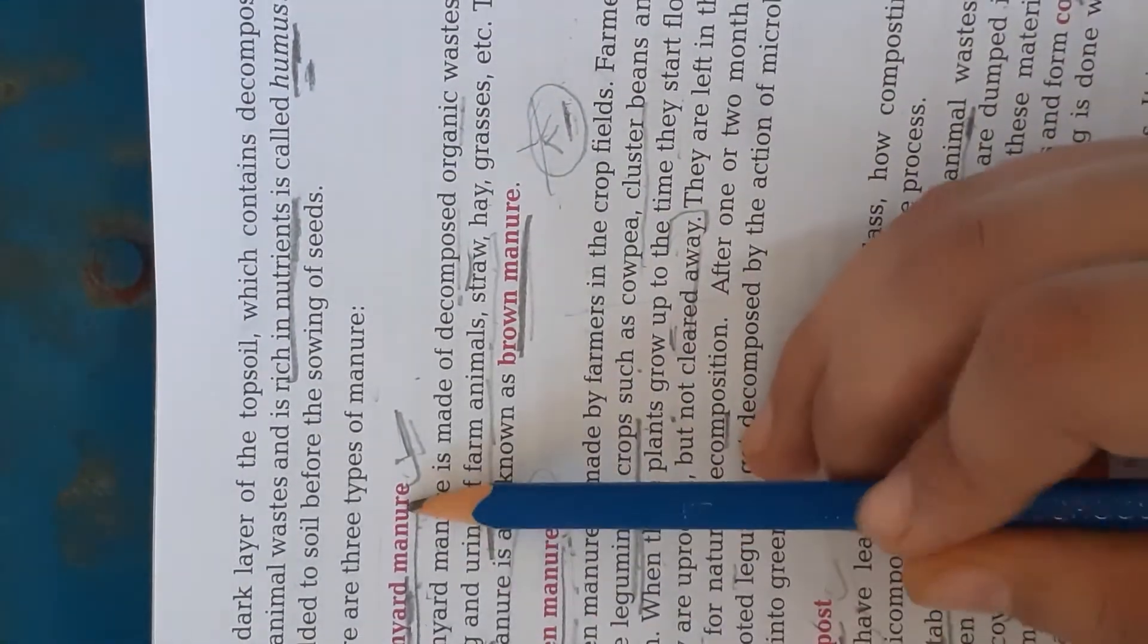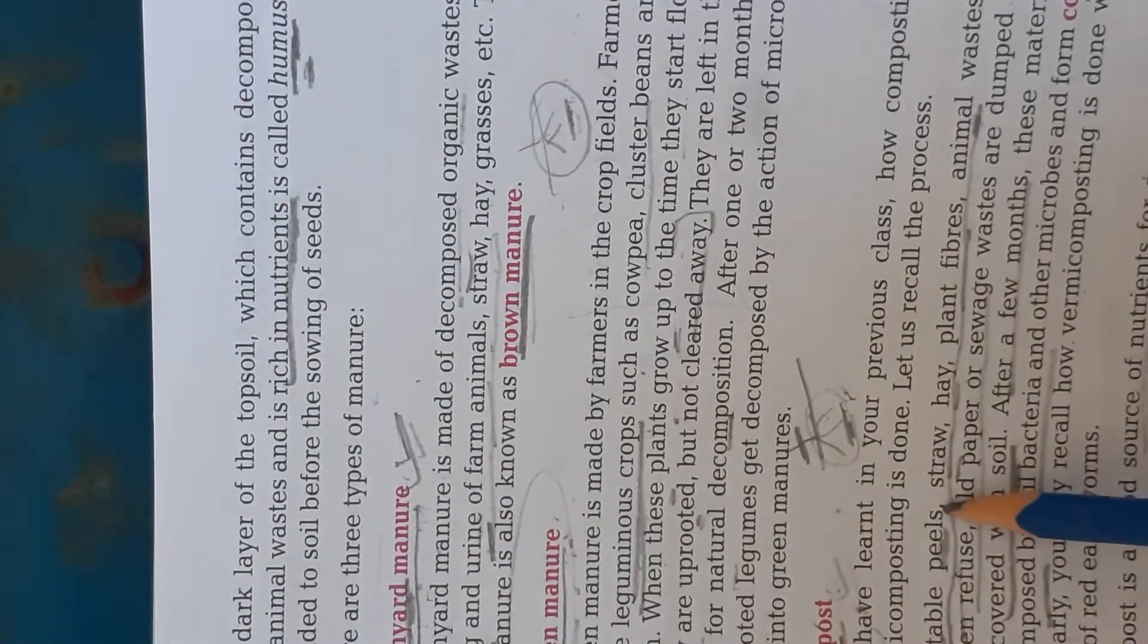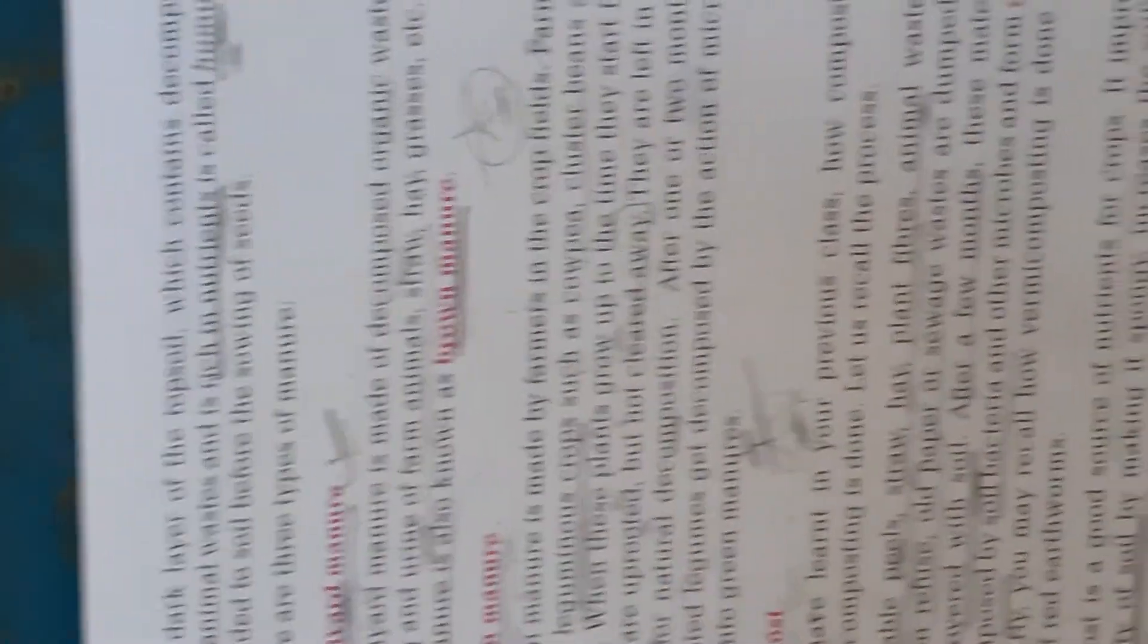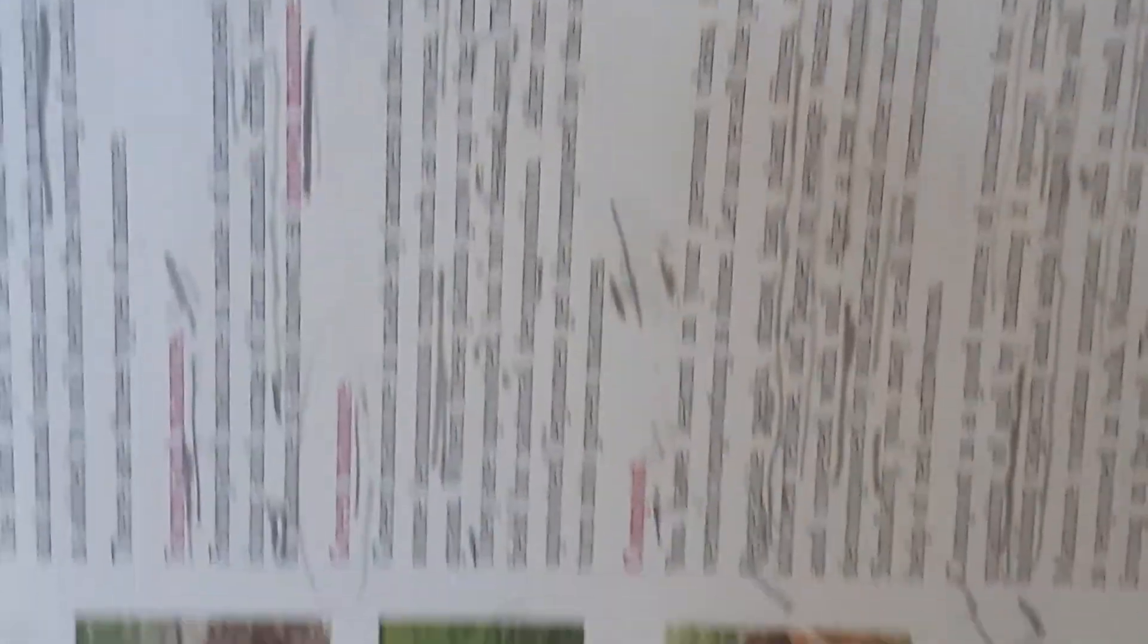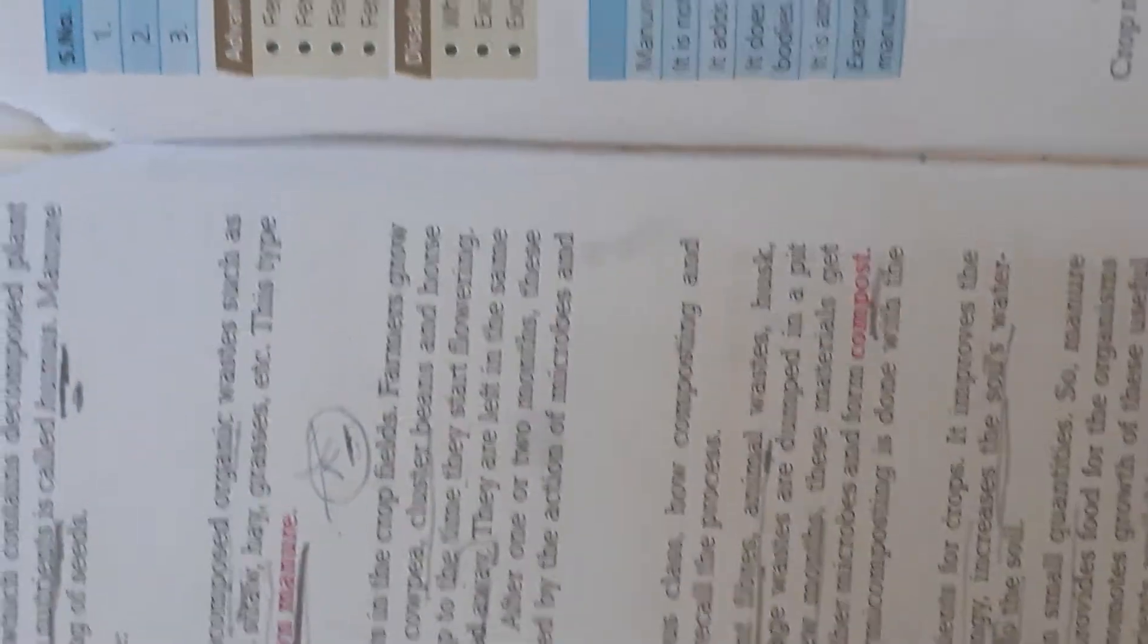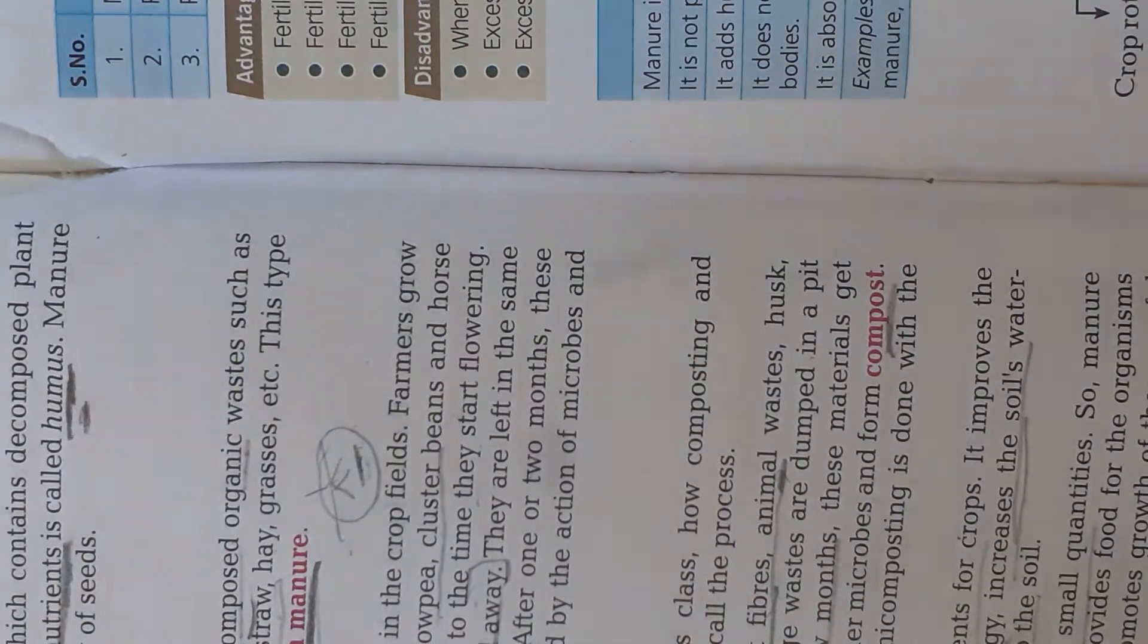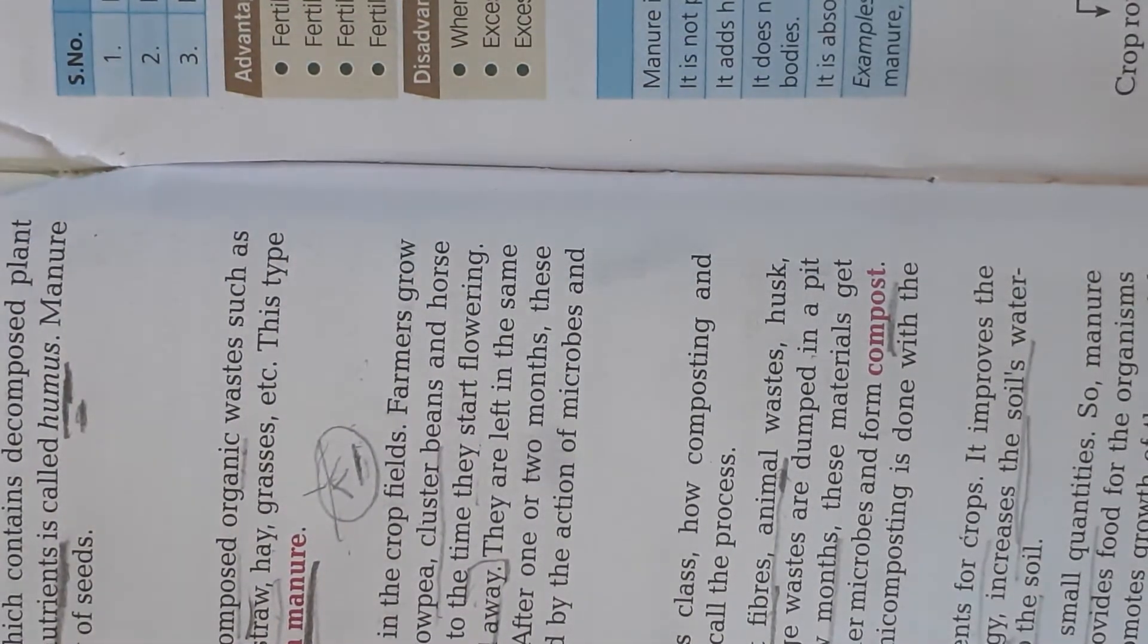Next is compost. Compost is same as farmyard manure but it includes the vegetable peels, straw, hay, plants, and it is preserved in the soil like this and covered with the soil. Due to this, microorganisms take place.